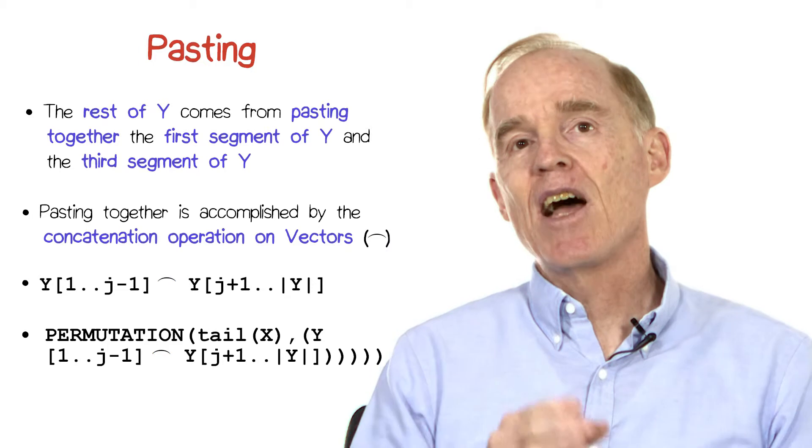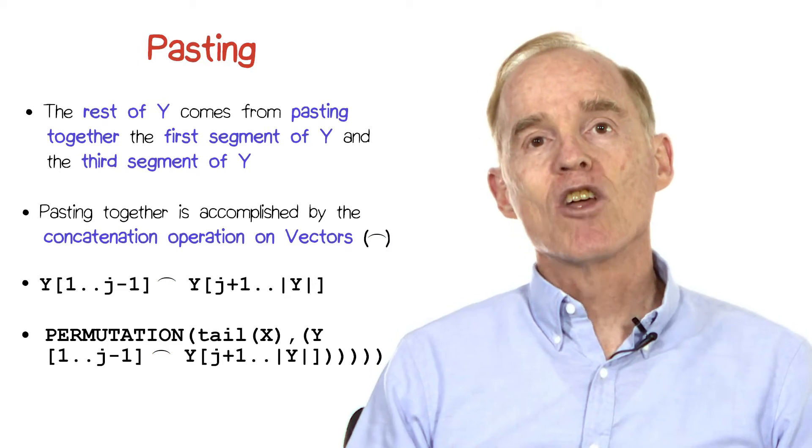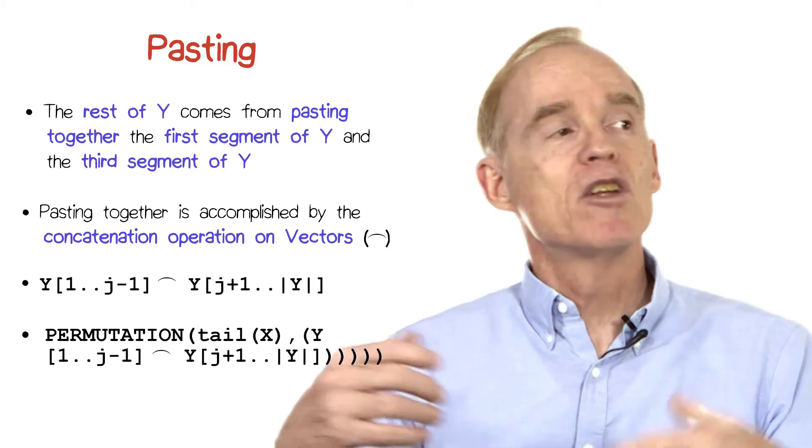we're going to paste those together, leaving out the jth position, and we're going to ask the question, is the tail of x a permutation of that?